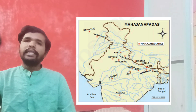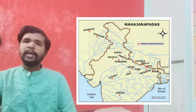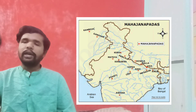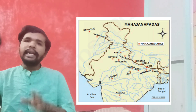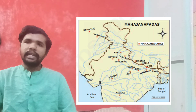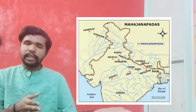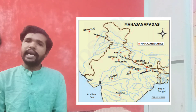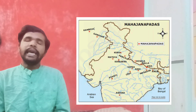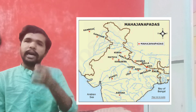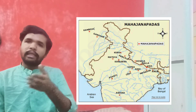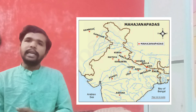The next is Koshala. Koshala is considered the kingdom from the Ramayana. There are two capitals in Koshala. Koshala is divided by the Sarayu River into two parts — Northern Koshala and Southern Koshala. The Northern Koshala capital is Shravasti, and the Southern Koshala capital is Kushavati.